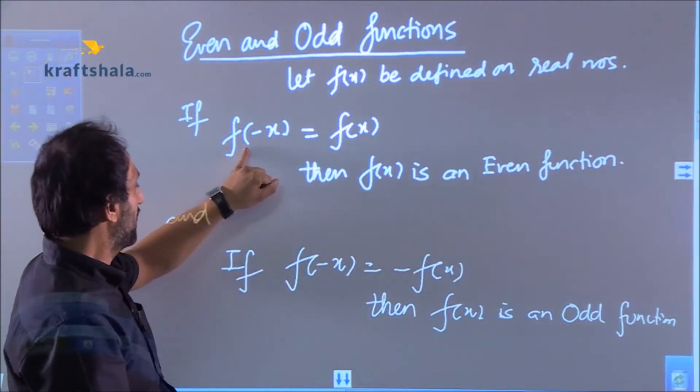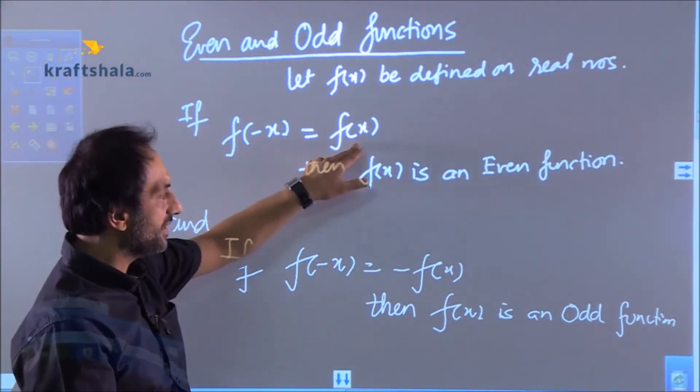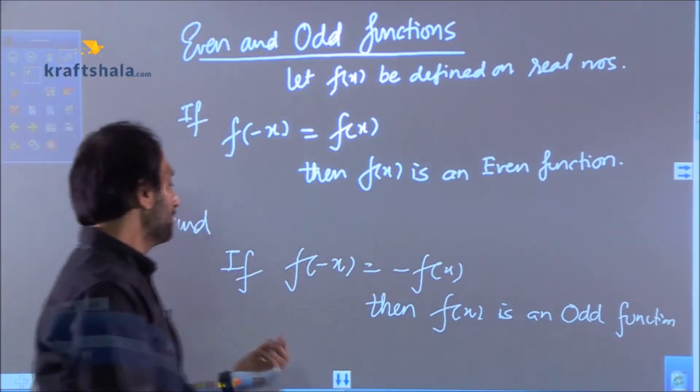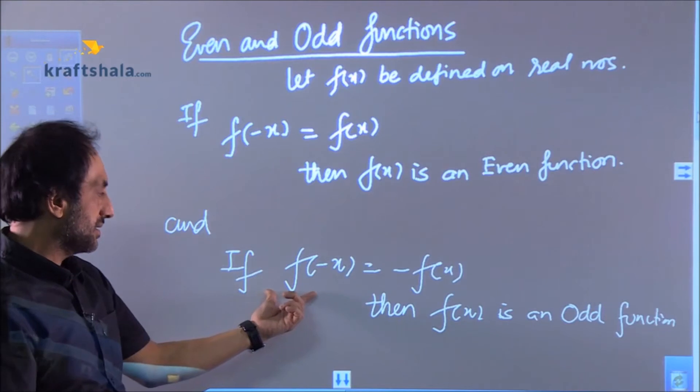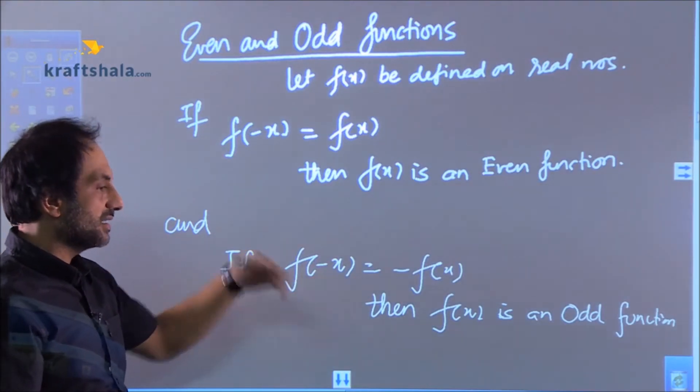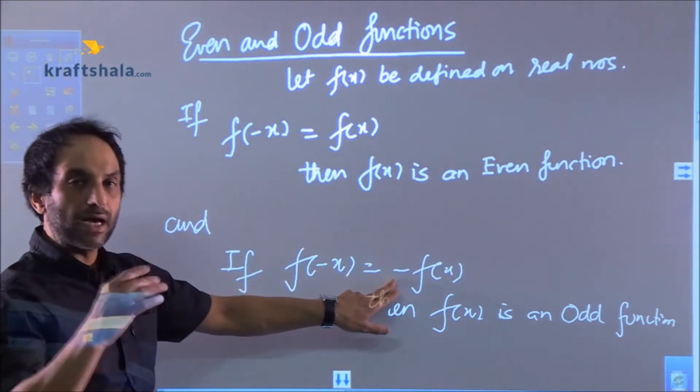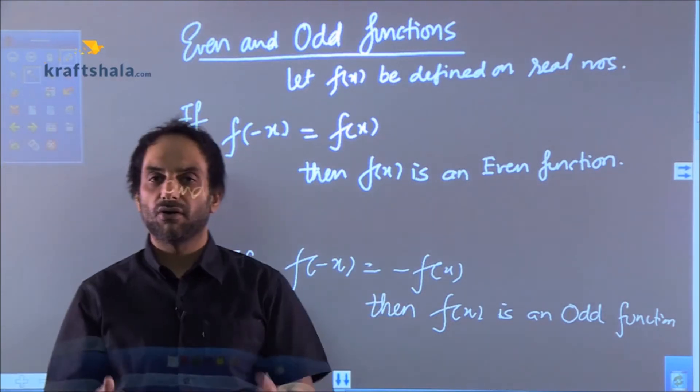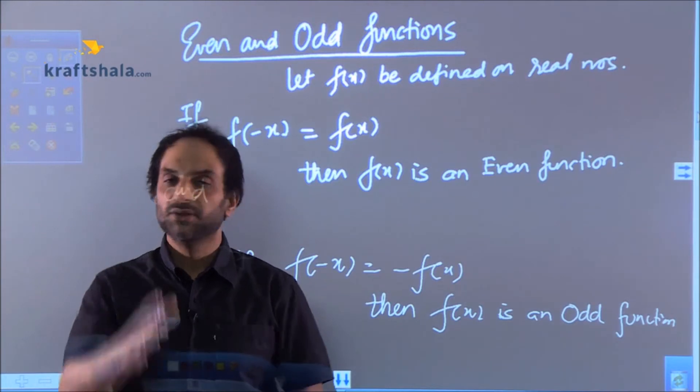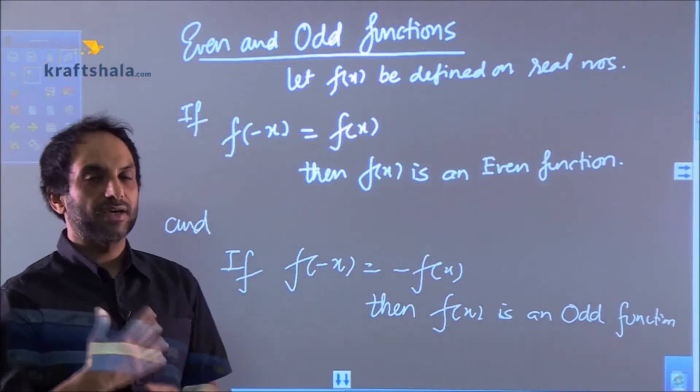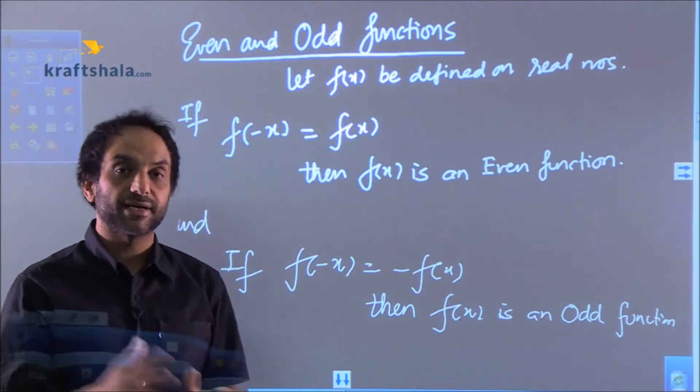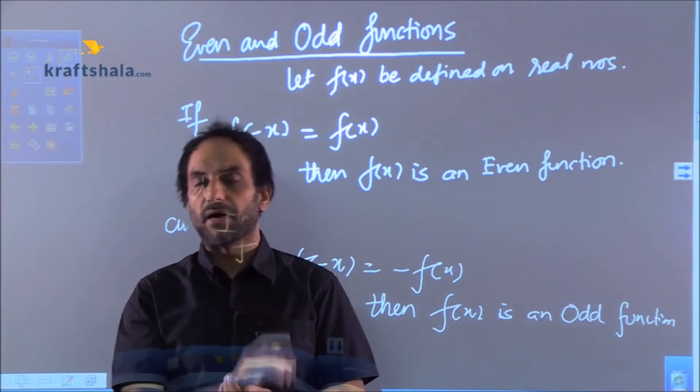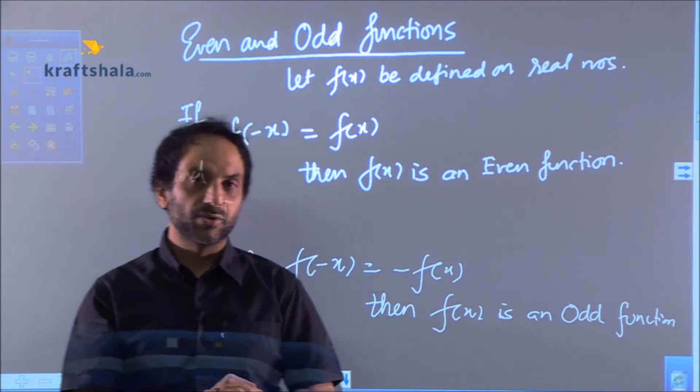So whenever f of minus x is f(x), that function is an even function. Now I'm taking you to another format: if I put minus x in place of x and I get minus of f(x), then we'll call that function an odd function. I can take the example of sin x. If I tell you to put x as minus x, that is f of minus x, then obviously you will say sin of minus x.